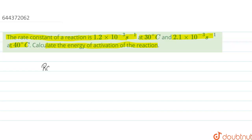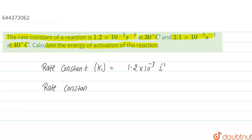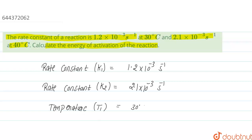In this question we are given the rate constant k1 and k2. The rate constant k1 at a temperature 30°C equals 1.2 × 10⁻³ s⁻¹, and k2 at 40°C equals 2.1 × 10⁻³ s⁻¹. The temperature T1 is 30°C, which we convert to kelvin: 273 + 30 = 303 K.